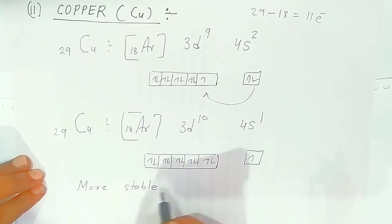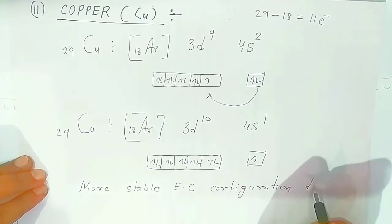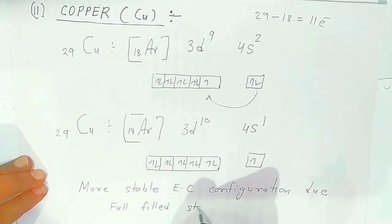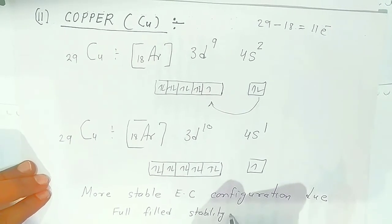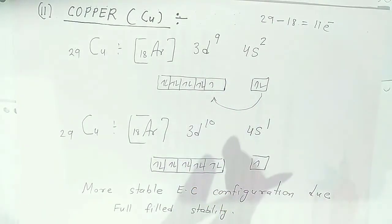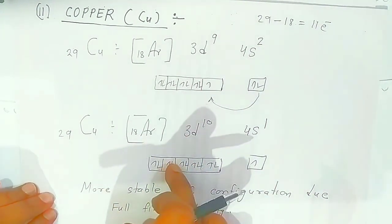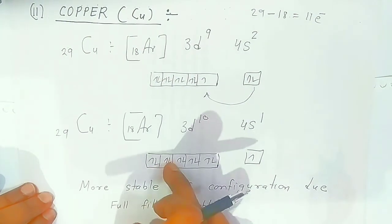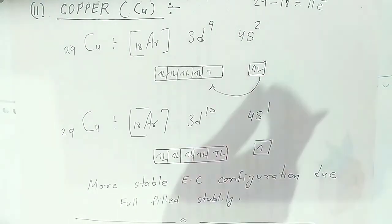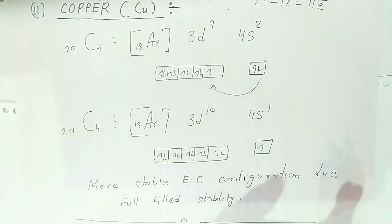So the actual observed electronic configuration of copper (atomic number 29) when forming compounds is [Ar] 3d10 4s1. This is more stable due to full-filled d orbital stability. The difference between the theoretical (ideal) and observed electronic configurations of chromium and copper is important for examinations. When asked why copper is more stable, the reason is full-filled d orbital stability. Please share and subscribe if you found this helpful.